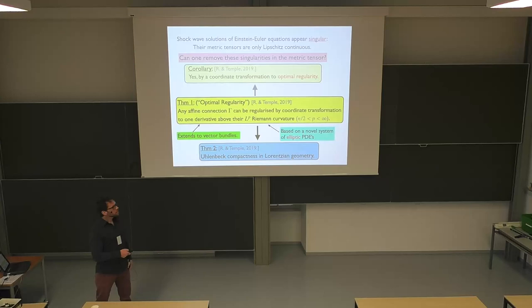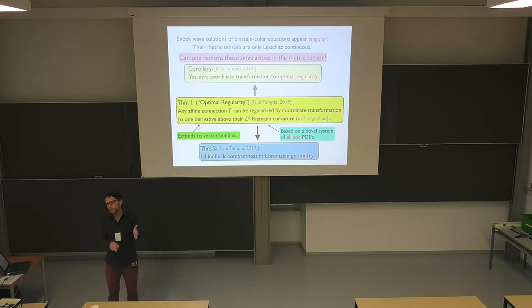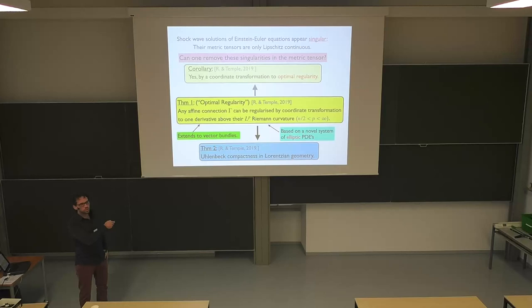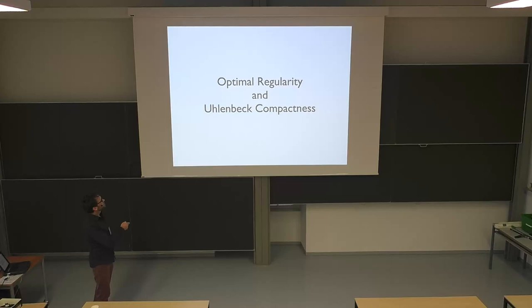This is all in the more general affine connection setting. Uhlenbeck's classical theorem is in the Riemannian setting on the base manifold with some varying part on the vector bundle. That's the classical theorem, and I'll show that in more detail later. So let me now introduce the main results slowly and then get to the elliptic PDE system to show you how to prove these results.